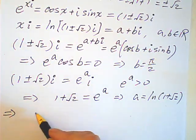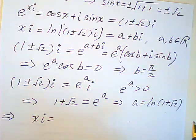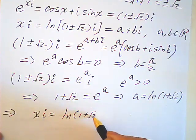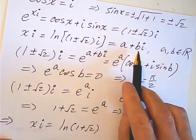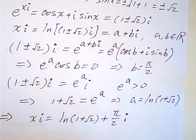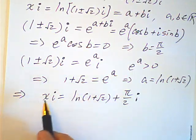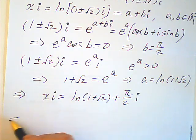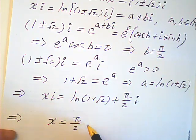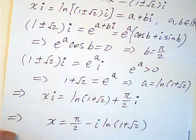Therefore, xi is a plus bi. a is natural log of 1 plus root 2, and b is half pi. So, we can find x by multiplying by negative i, right? So, this means that x is equal to half pi minus i natural log of 1 plus root 2.